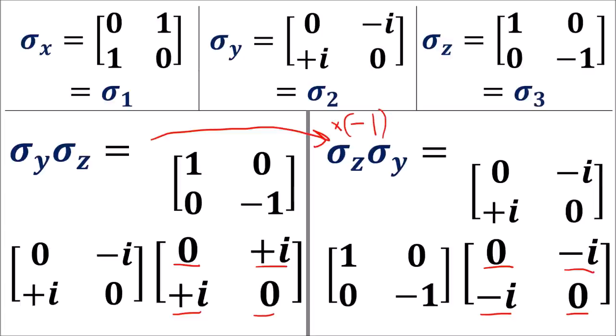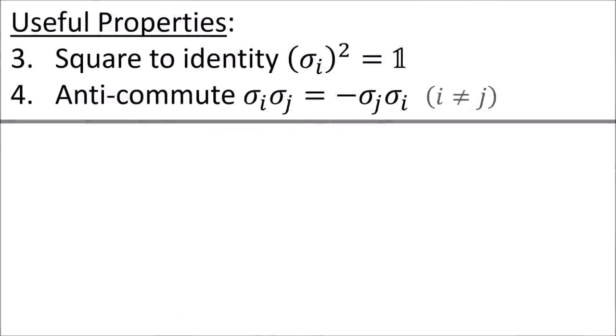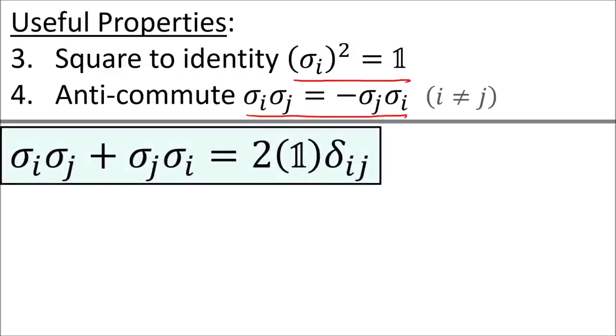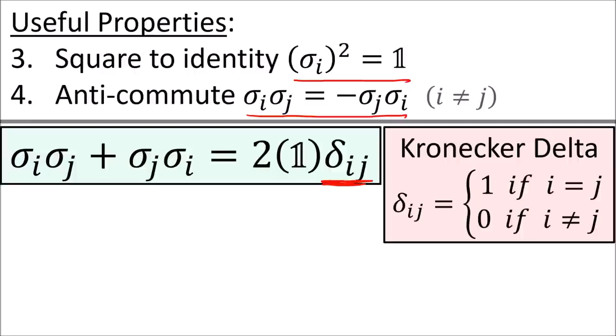You can check for yourself that this property also applies to multiplying the other pairs of sigma matrices. These last two properties—that sigma matrices square to the identity and anti-commute—can be summarized by this formula. The delta symbol here is called the Kronecker delta, which equals 1 if the i and j indices are the same and equals 0 if they are different.